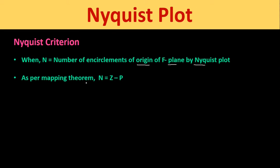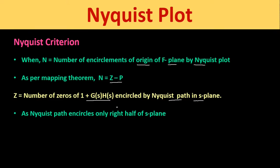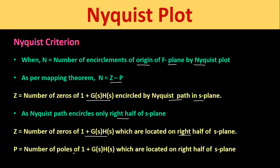As per the mapping theorem studied in the last class, the number of encirclements of the origin of the F-plane by the Nyquist plot equals Z minus P. Here Z is the number of zeros of 1 + G(s)H(s) encircled by the Nyquist path in the s-plane, specifically in the right half of the s-plane. P is the number of poles of 1 + G(s)H(s) located in the right half of the s-plane.